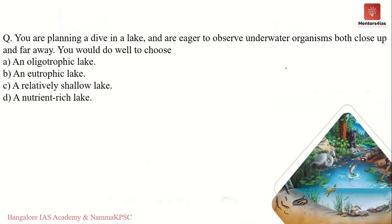A practice question: you are planning to dive in a lake and are eager to observe underwater organisms both close up and far away — which lake would you choose? Options: oligotrophic lake, eutrophic lake, relatively shallow lake, nutrient-rich lake. Eutrophic and nutrient-rich lakes promote eutrophication, which is not conducive for organism or fish growth, so B and D are cancelled. A shallow lake won't support great diversity. The correct answer is the oligotrophic lake.